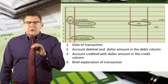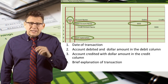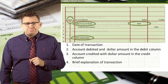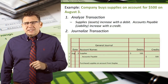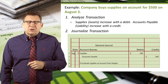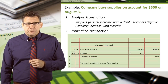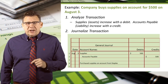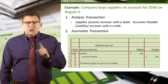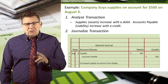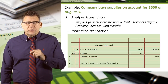Let's look at three transactions we previously analyzed and see if we can journalize them. In this example, a company buys supplies on account for $500 on August 3rd. When we analyze this transaction, we determine that supplies, an asset account, is increased with a debit, and accounts payable, a liability account, is increased with a credit.